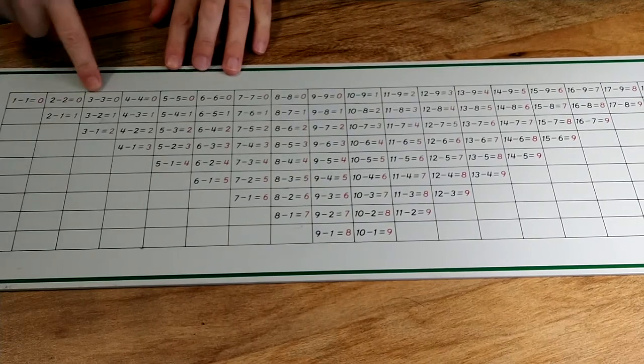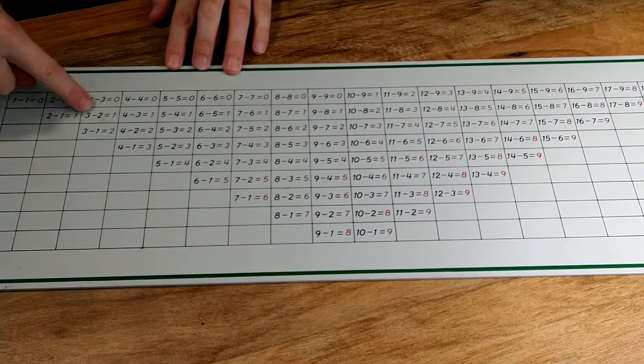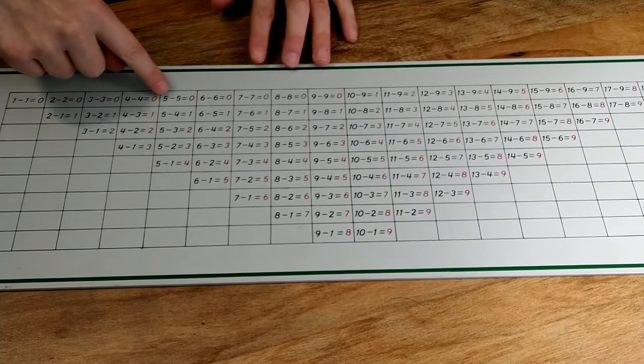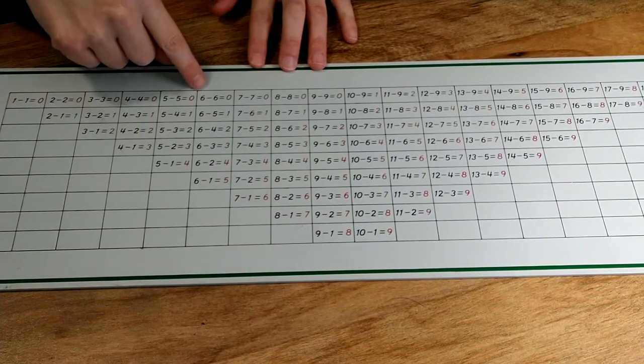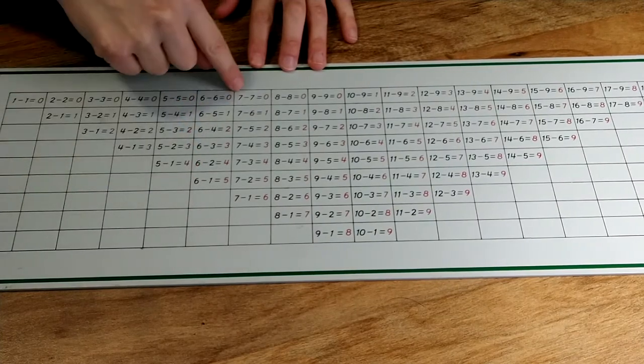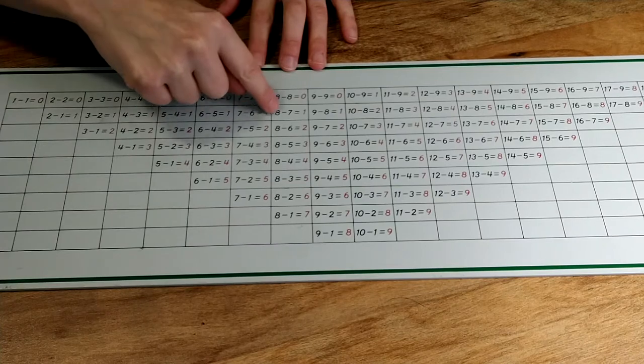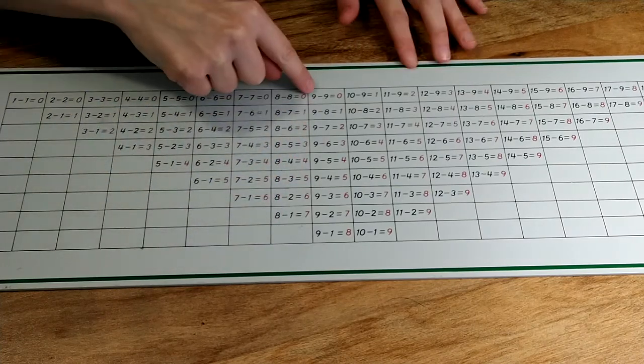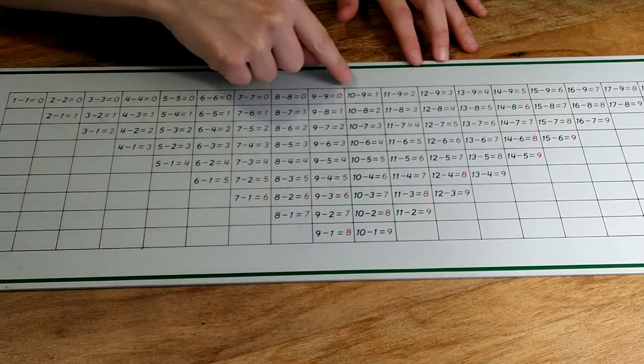These are all of the facts with a subtrahend of three, four, five, six, seven, eight, nine.